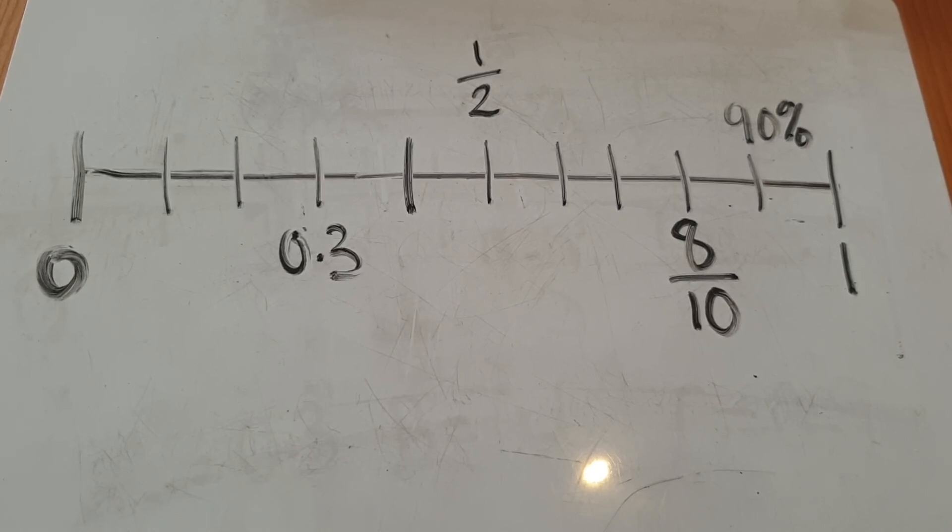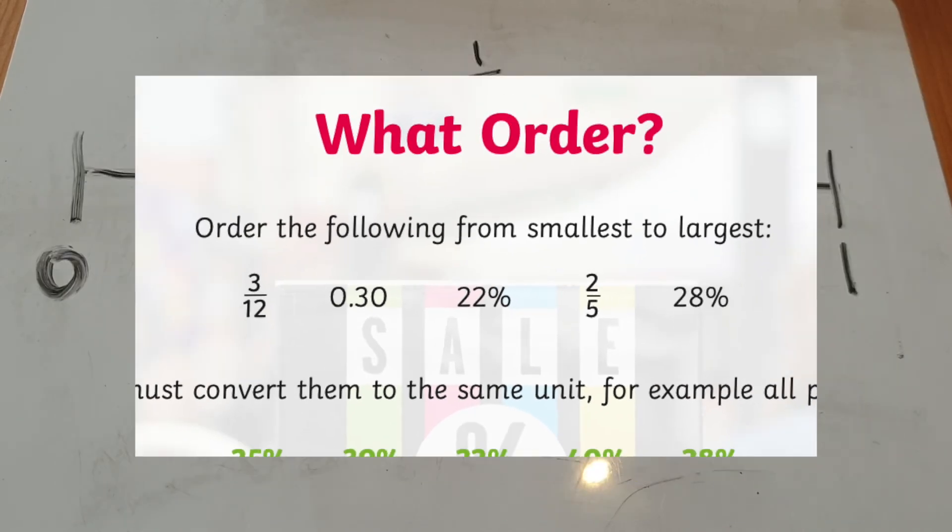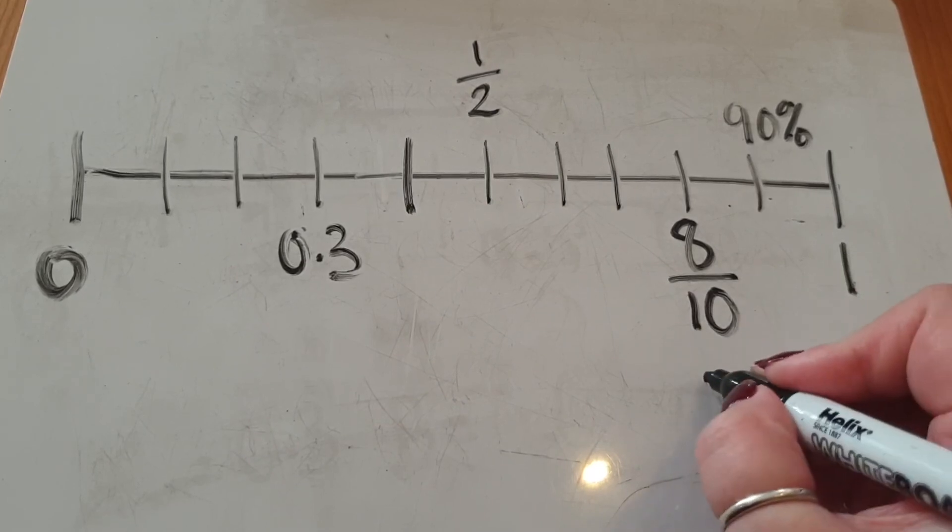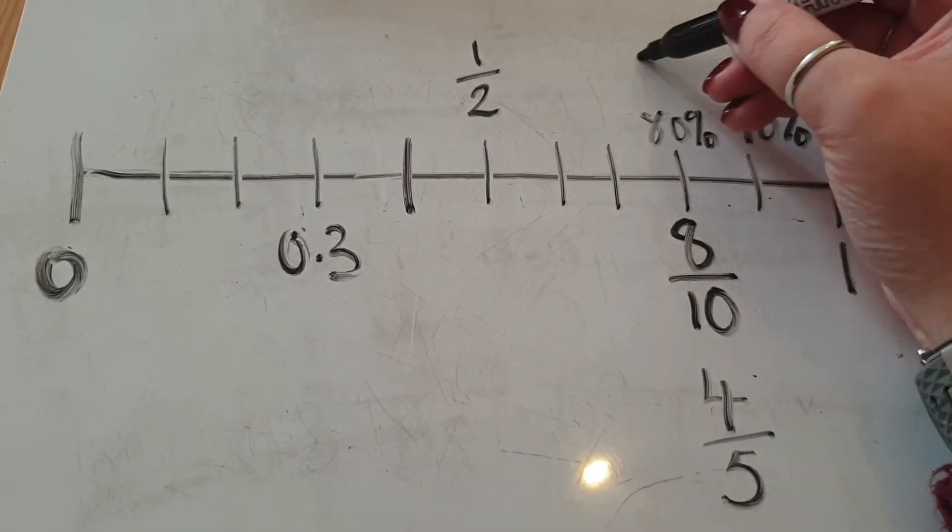On this number line we've got decimals, fractions and percentages. Here you can see how all three can be used together when ordering on a number line. Also I could use this fraction and simplify it or find all versions of that decimal fraction.